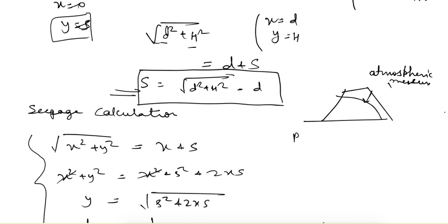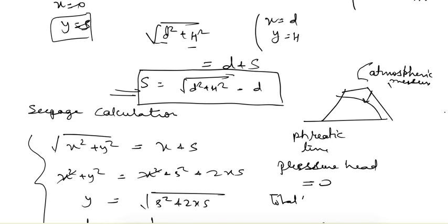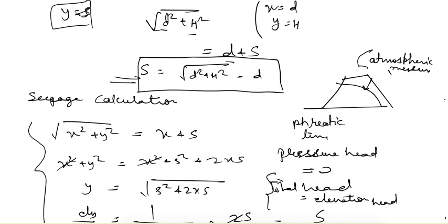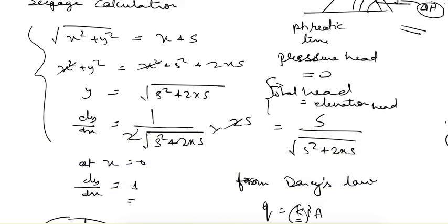One more important point: the top surface is in contact with the atmosphere, so it is at atmospheric pressure, meaning pressure head = 0. Therefore, total head equals elevation head along this surface. This surface is called the phreatic line. This property helps in constructing the flow net, because for each equipotential drop Δh, the vertical distance between intersections on the phreatic line is also equal to Δh.